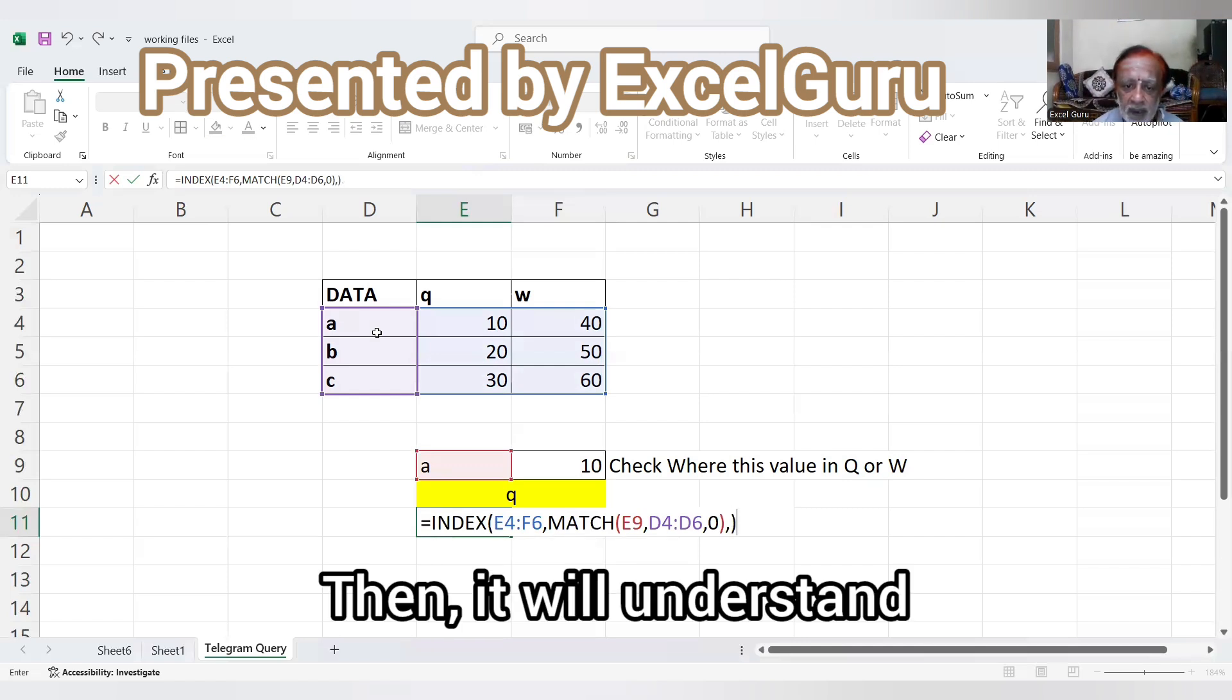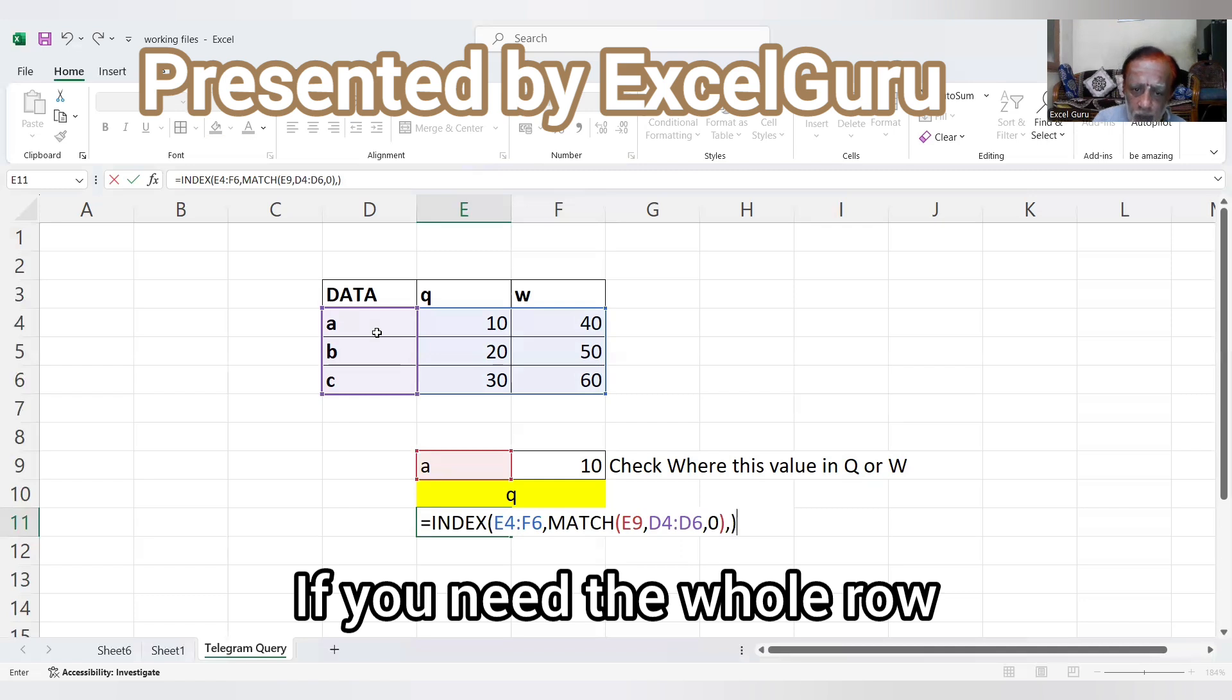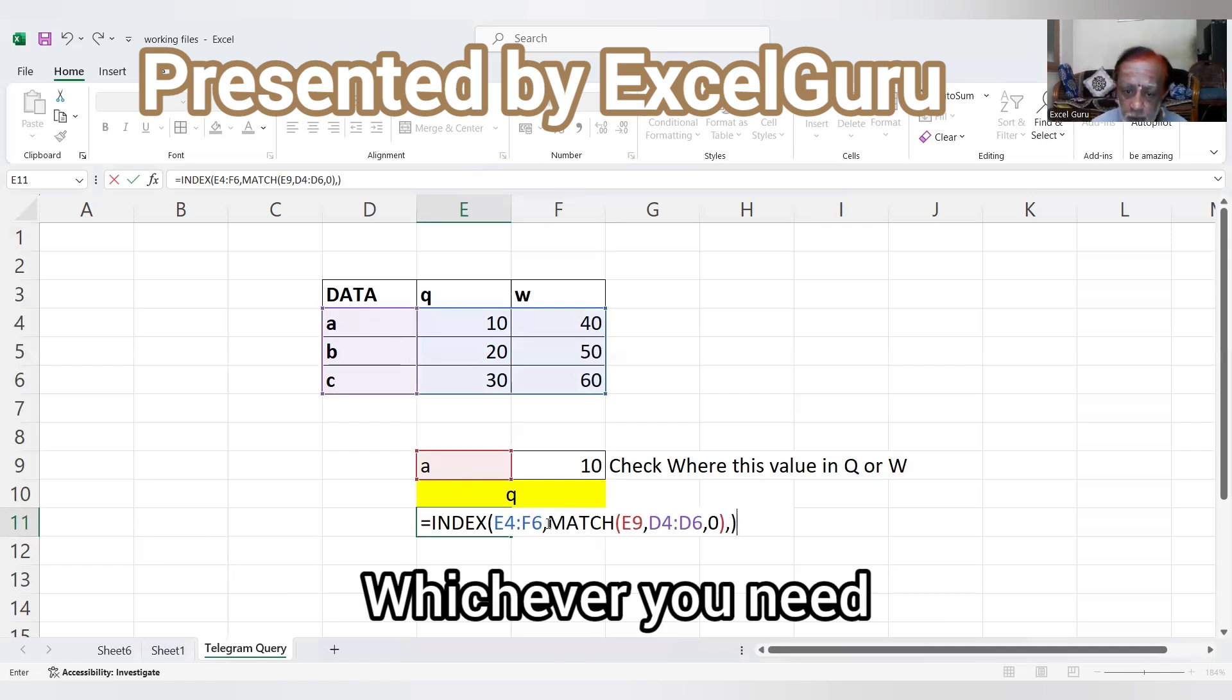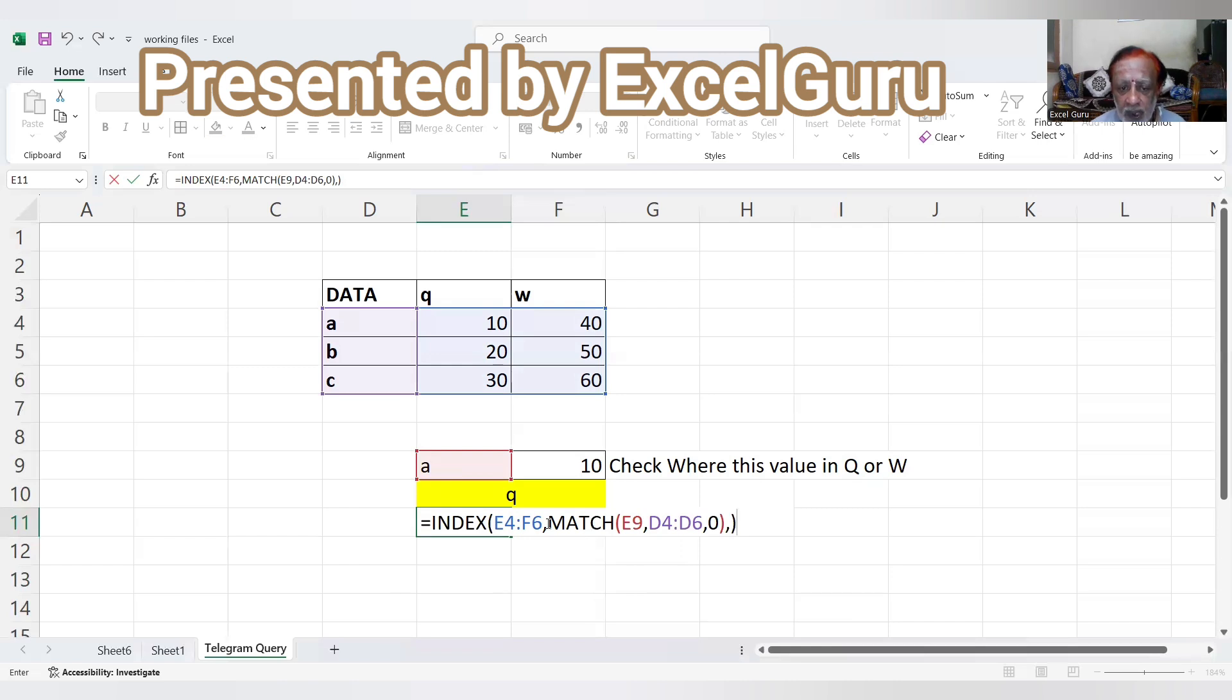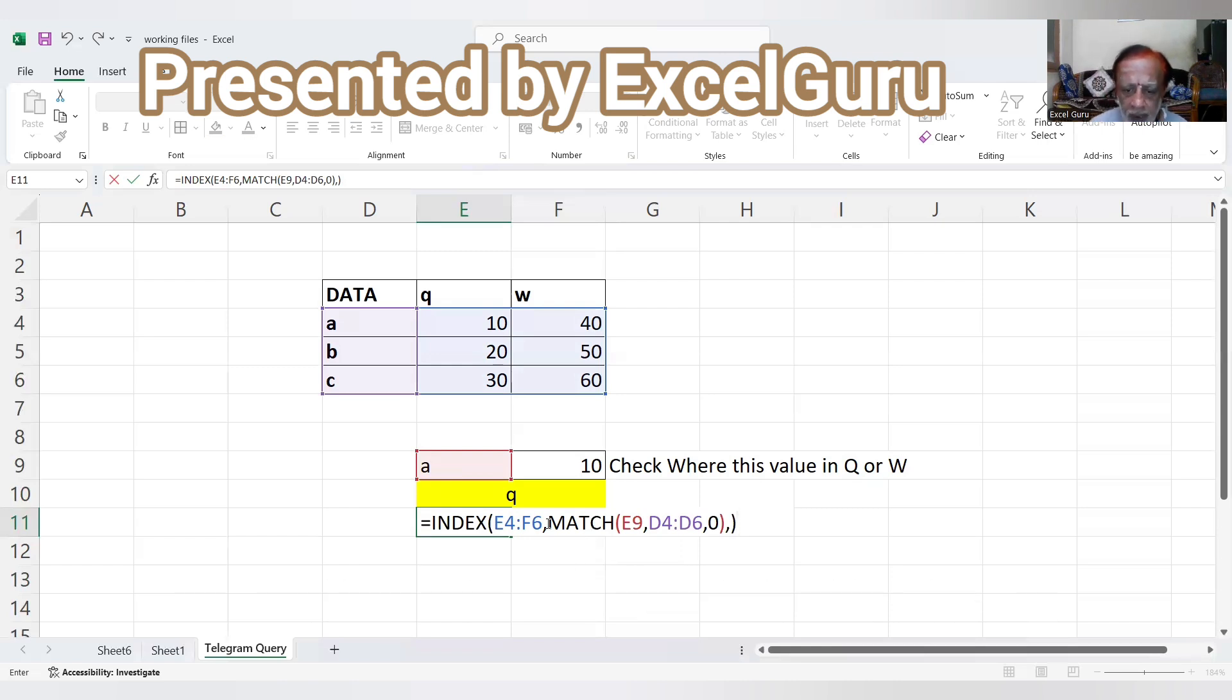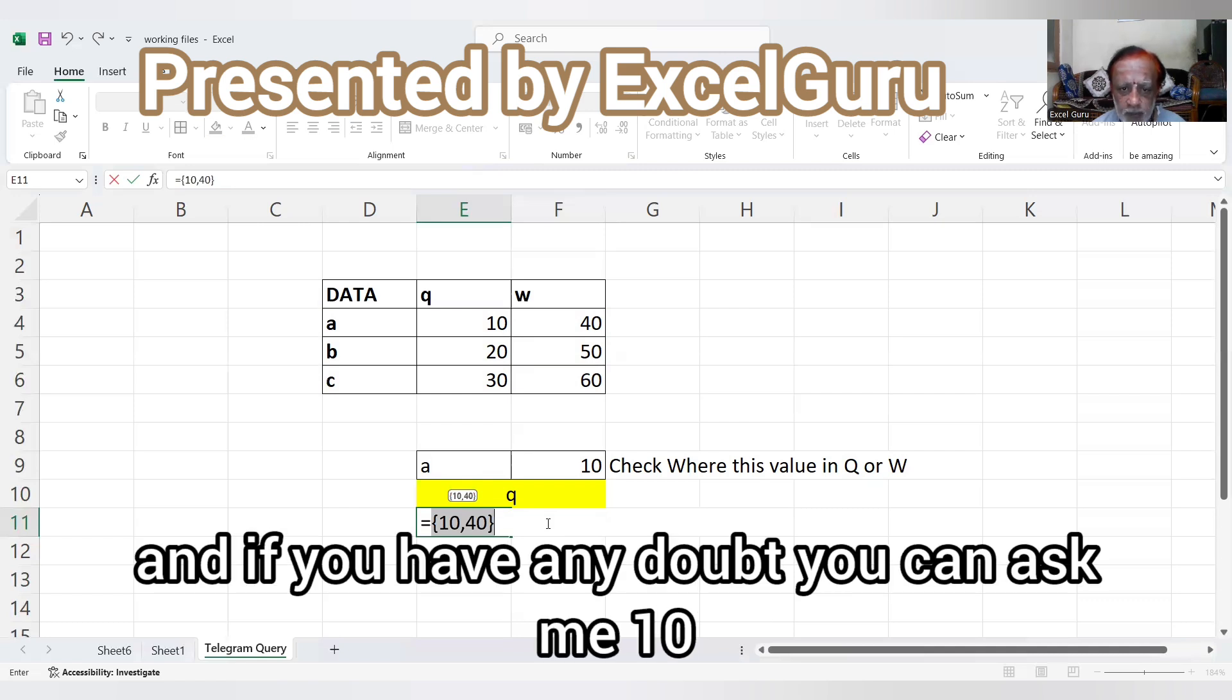Then it will understand that you need the whole row. If you need the whole row, you have to use a comma over here. Whichever you need, just keep that one. I think you understood, and if you have any doubt, you can ask me.